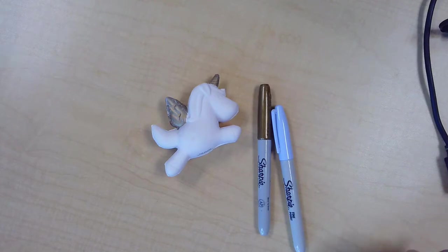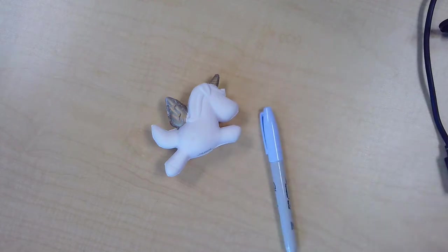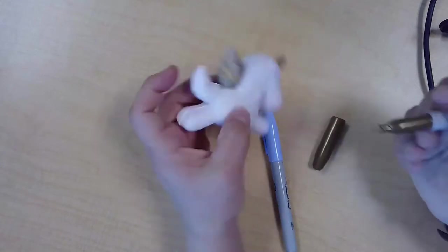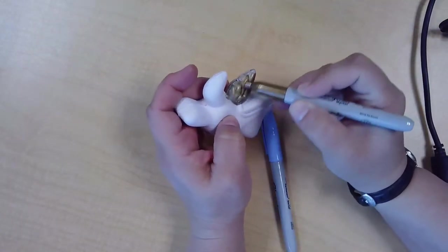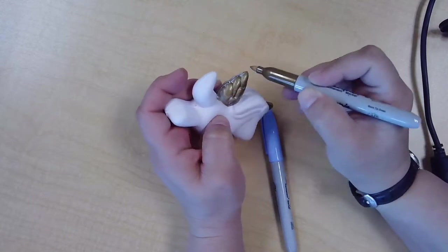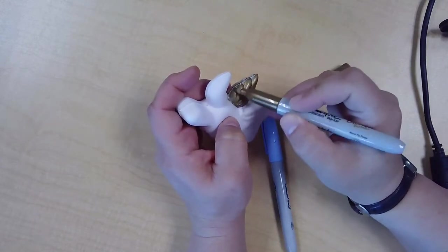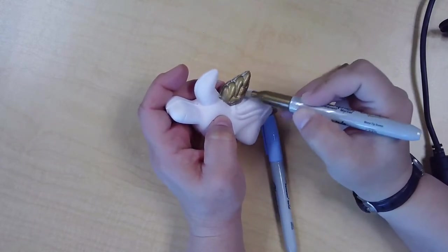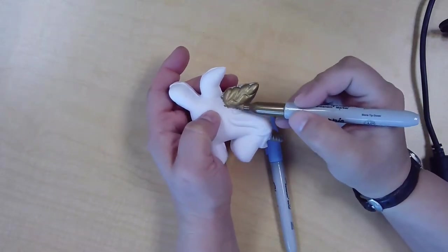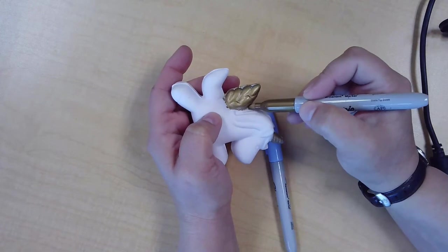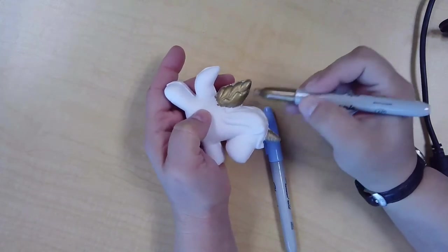Here I've got gold, and one will be just a pretty pastel or vibrant color. Basically, you're going to use your markers to color your unicorn however you would like. I think the metallics look really good for the wings and the horn, but you can use it wherever on your unicorn you want.